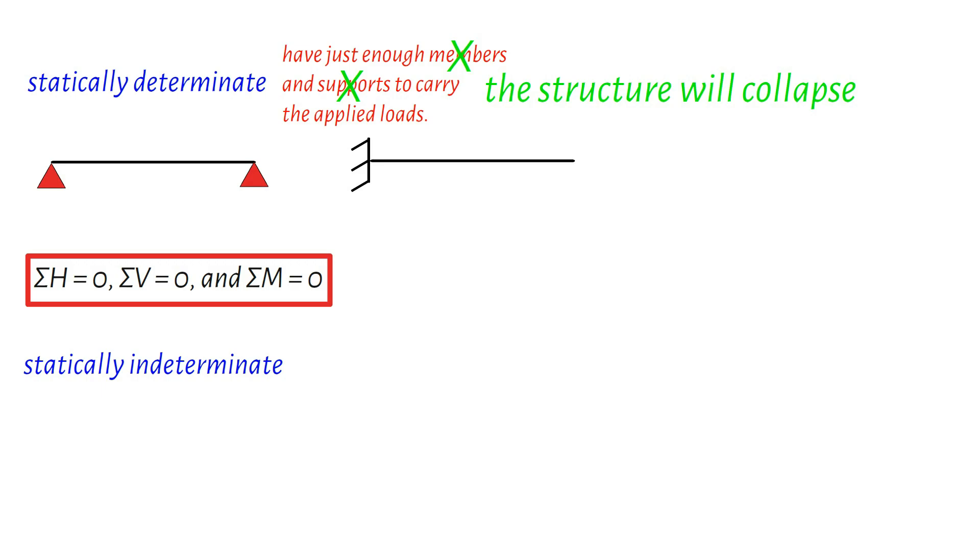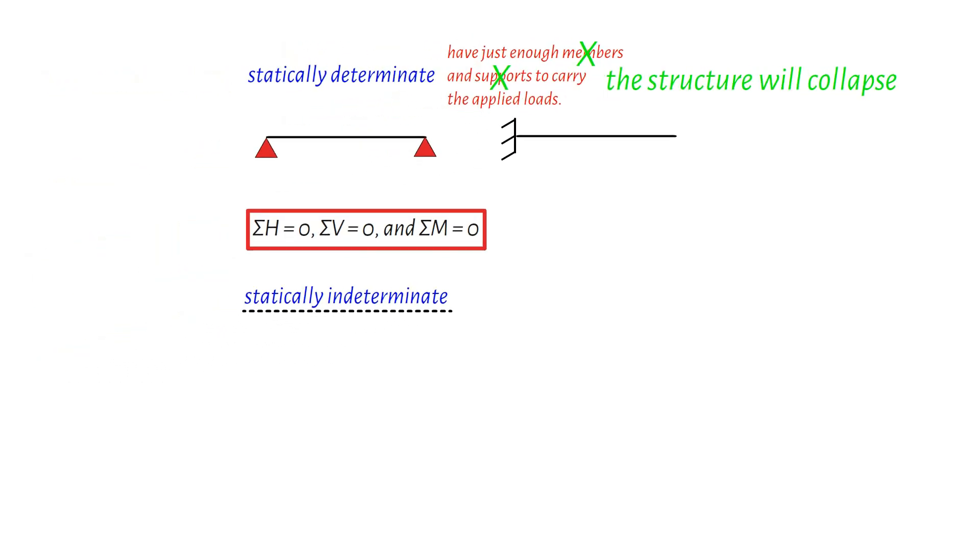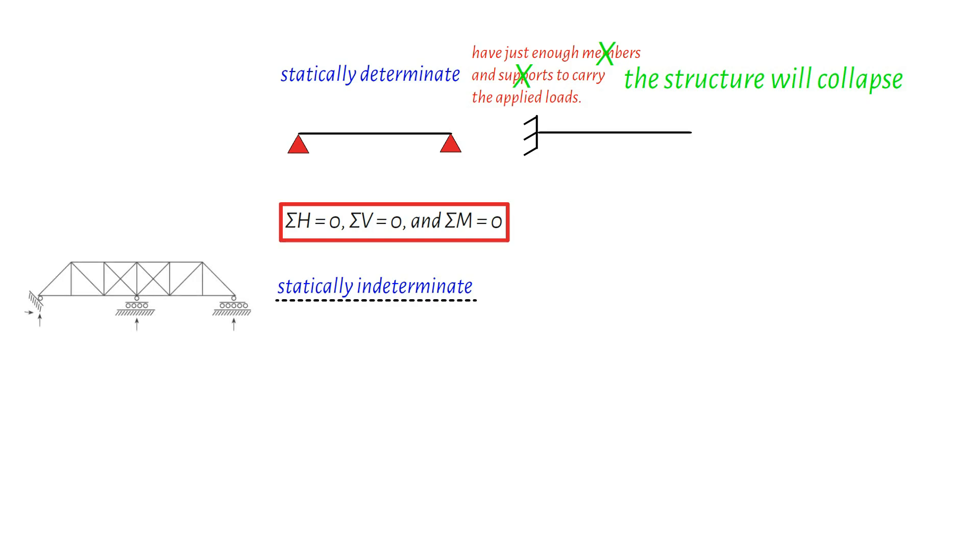Moving on to more complex structures, let's explore statically indeterminate structures. Unlike their determinate counterparts, these structures have extra members or supports, introducing redundancies. Analyzing such structures used to be done manually in the past, but with the increasing number of redundancies, these methods became burdensome and relied on simplifying assumptions.